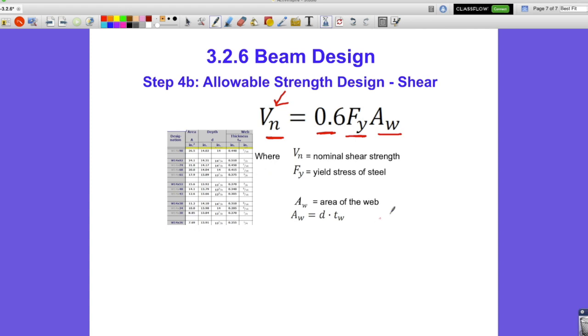Because we already know the nominal shear strength that we need, we're going to have to work this backwards. You've been given the yield strength of steel as 50,000 psi. Remember it's pounds per square inch, so we have to do our dimensional analysis to make sure the units are going to work out. We're going to have to rearrange this and solve for the area of the web.